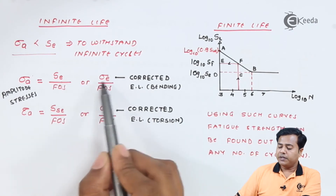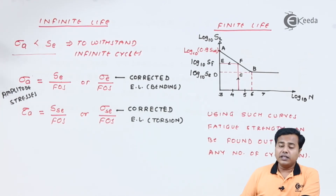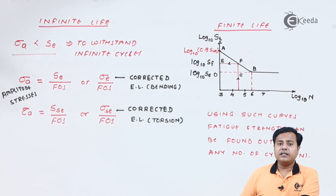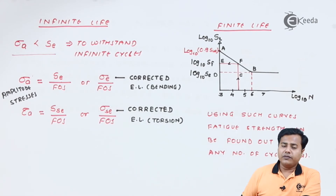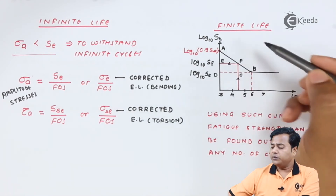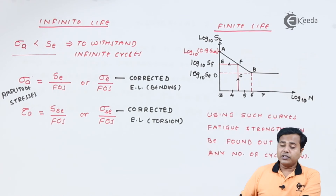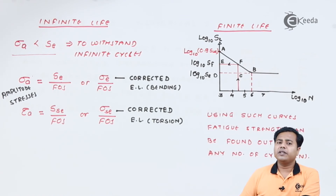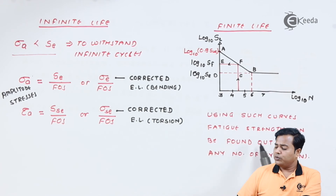These are the two important relations to use when defining infinite life. When it comes to finite life, the procedure is lengthier and uses a graph — the SN curve — which must be plotted for each given material. For example, this curve is valid for steel materials, and it is used to find out the fatigue strength at any number of cycles.